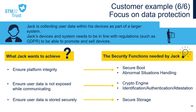In our sixth and last example, data protection is of the utmost importance. Jack is collecting user data within his devices as part of a larger system. Jack's devices and system need to be in line with regulations such as GDPR to be able to promote and sell devices. To comply with this, Jack needs to ensure the confidentiality of the user data, which are collected and stored locally, for which he needs to enable secure data communication between his devices and his system. He also needs a secure boot to ensure the integrity of the platform collecting and storing this data to avoid malware exposing them.